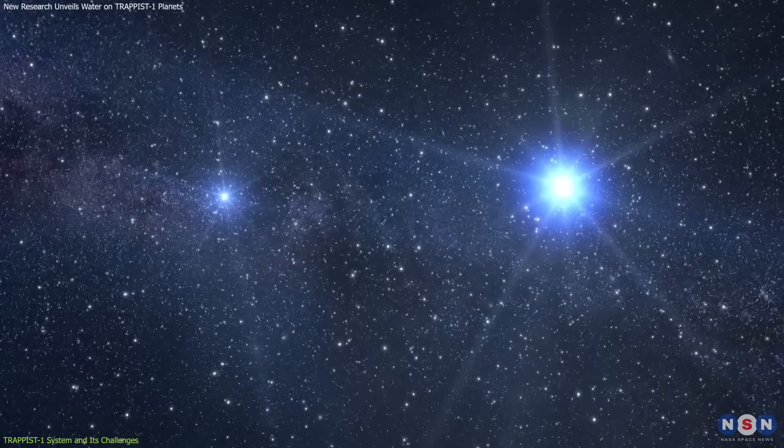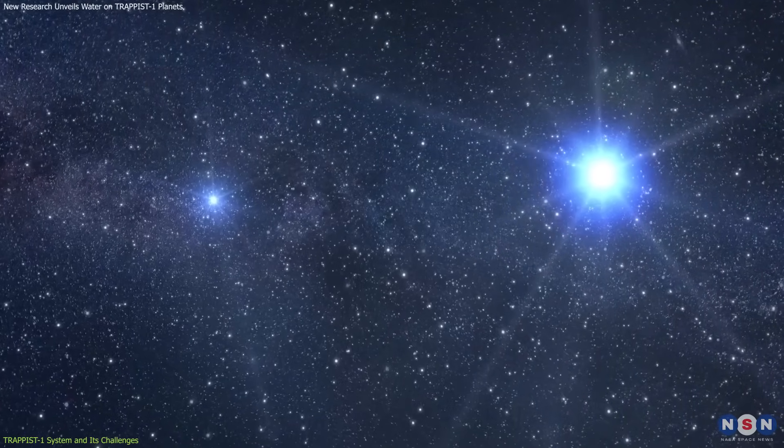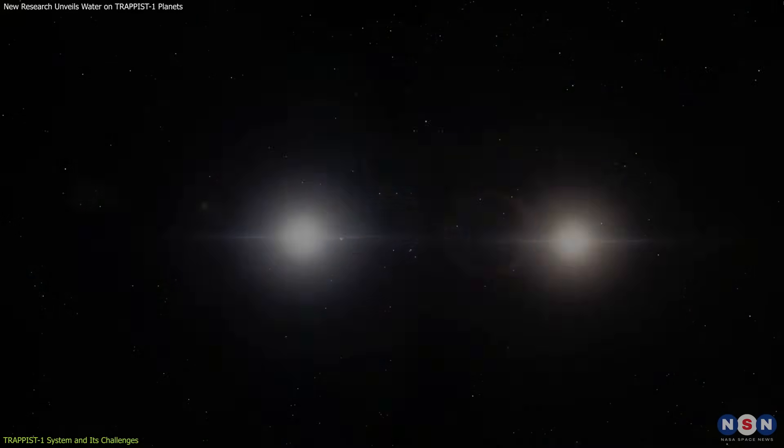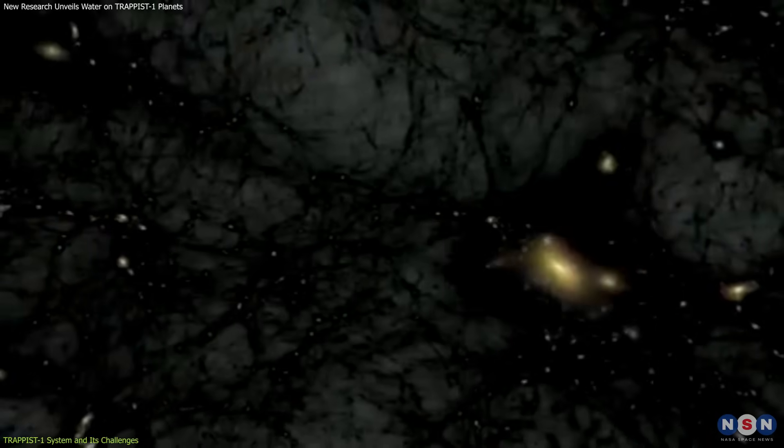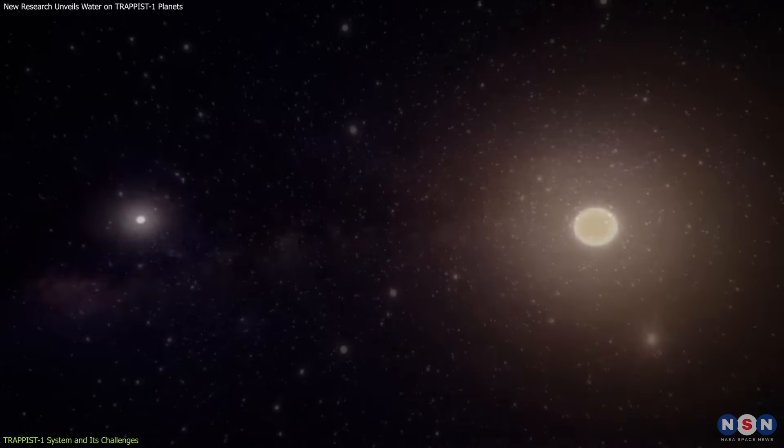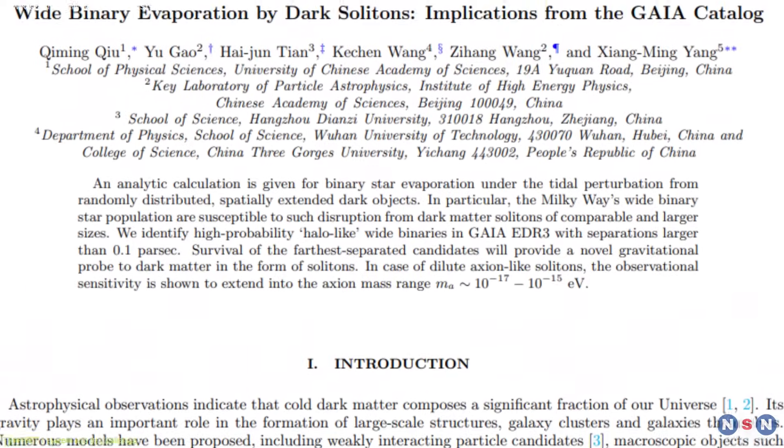Binary stars are particularly useful for studying dark matter because their orbits provide a sensitive measure of gravitational influences. If dark matter exists as theorized, its gravitational effects should cause measurable disturbances in these orbits. This is where the recent research comes in.